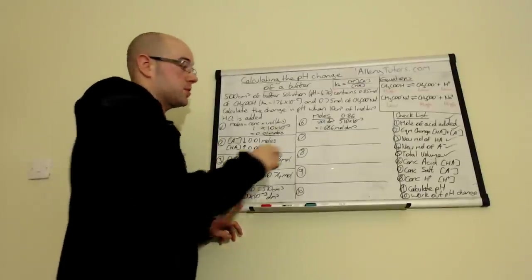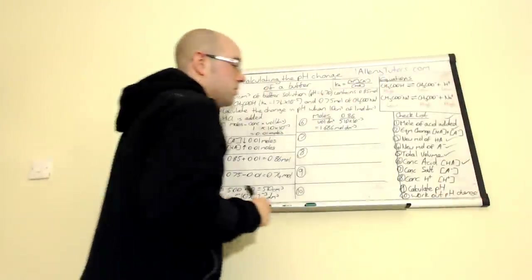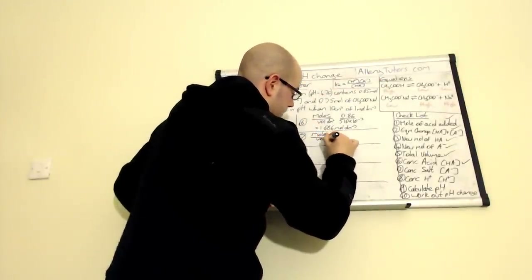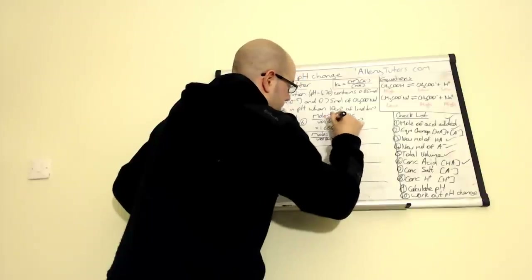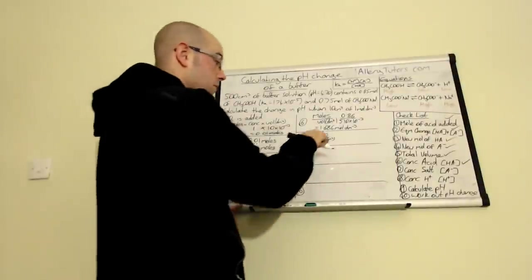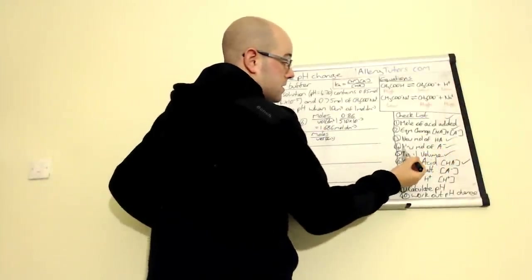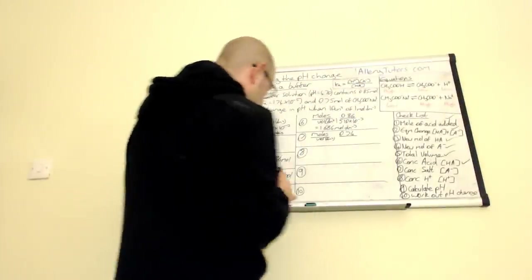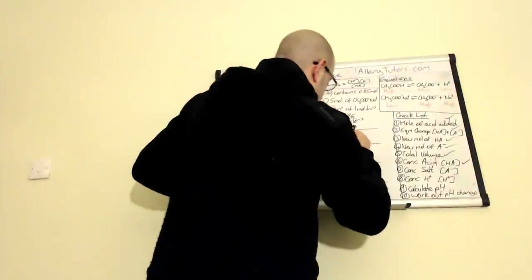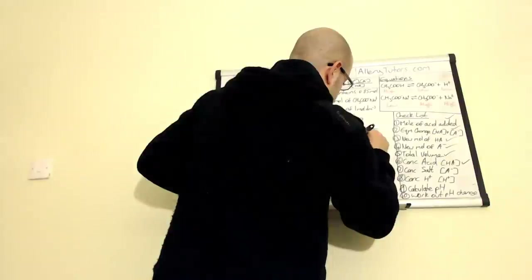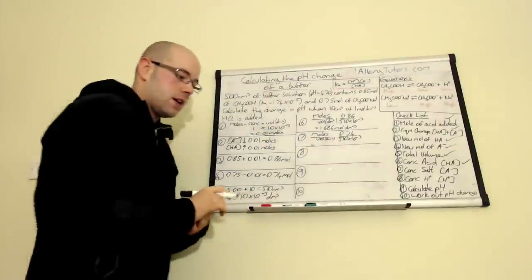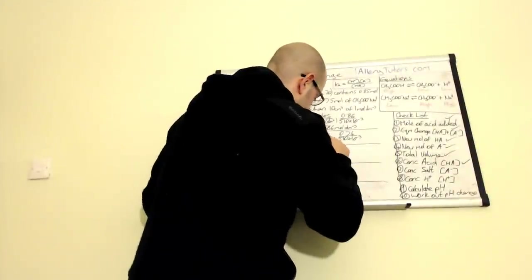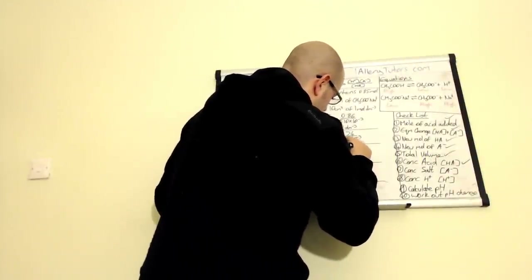Step seven is working out the concentration of the salt — again, moles divided by volume in dm³. The moles of salt from step four is 0.74, divided by the total volume of 510 × 10⁻³, giving a concentration of 1.451 mol dm⁻³.